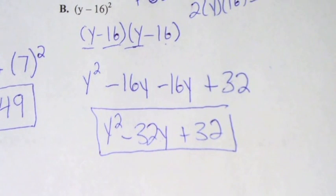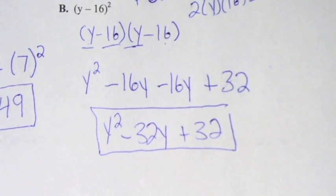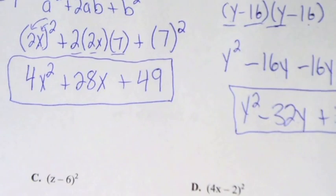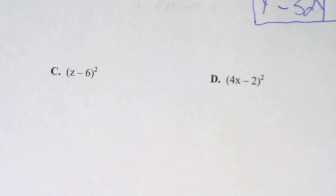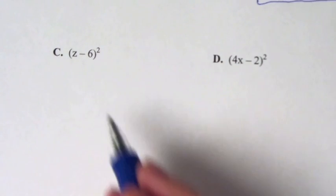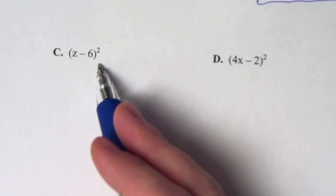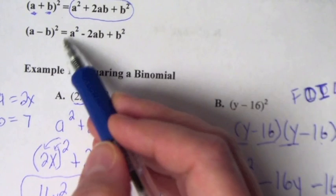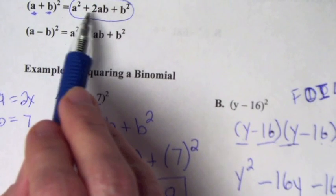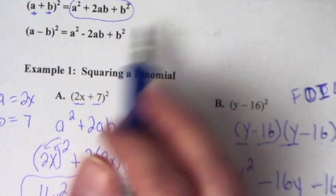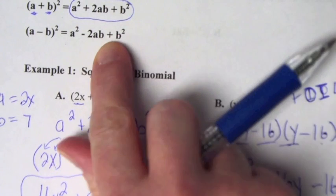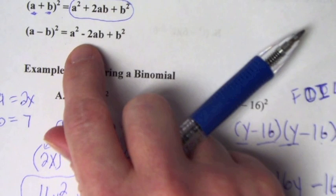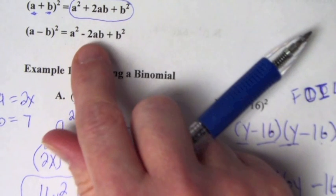You are expected to know how to use these formulas. I will give you the formulas on a test, but you need to know how to use them. For letter C, which is in the form (a - b) squared, we use the formula a squared minus 2ab plus b squared. The only difference between the plus and minus formulas is that first sign — otherwise they're exactly identical.